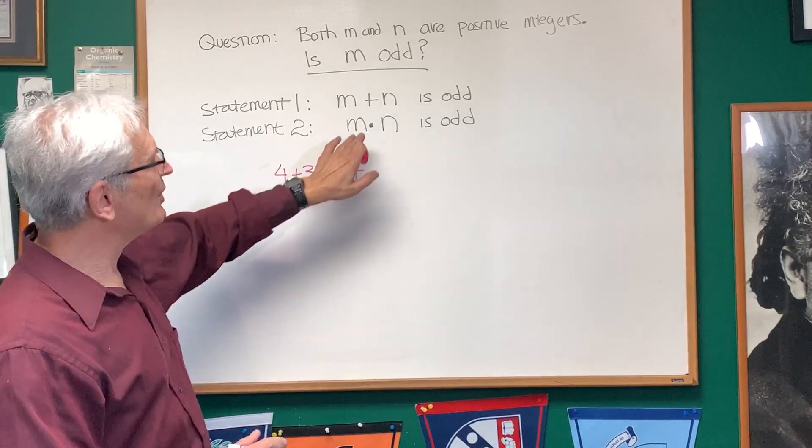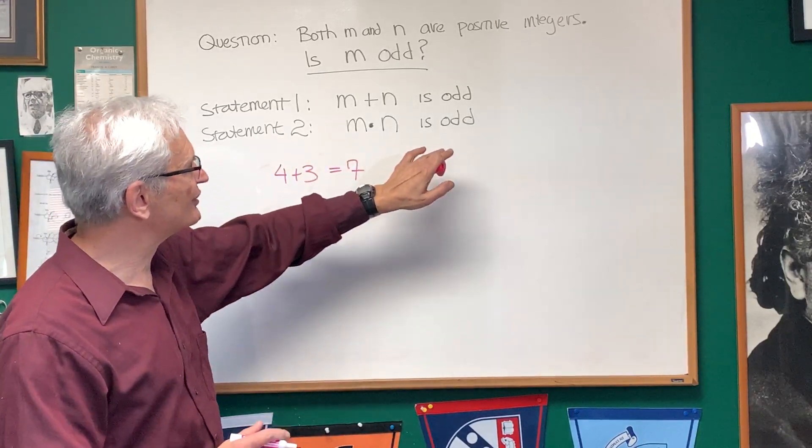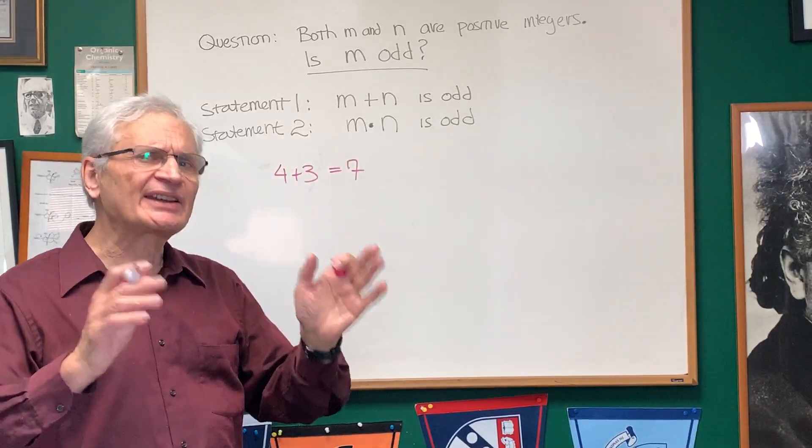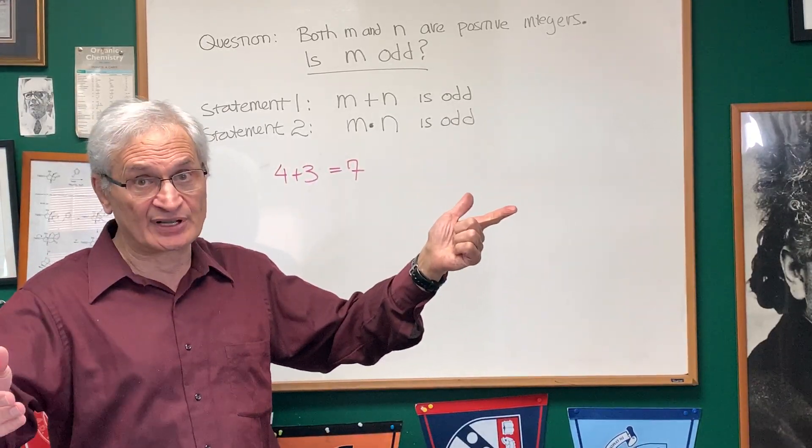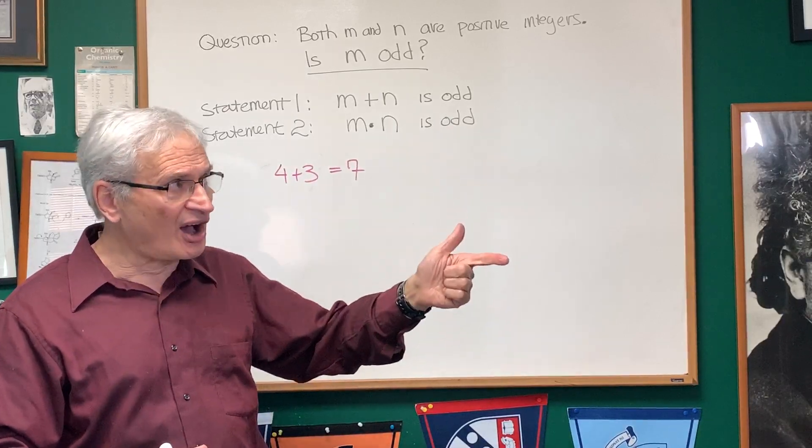All right, now let's look at statement two. M times N is odd. Well, if you think about even and odd numbers, how many choices are there? Even times even, that gives you an even number.